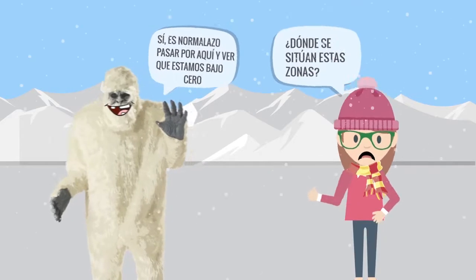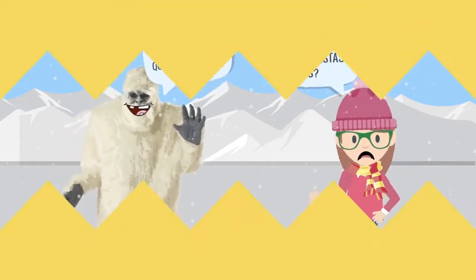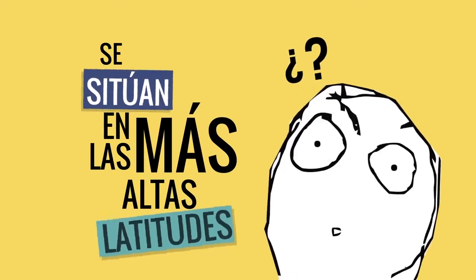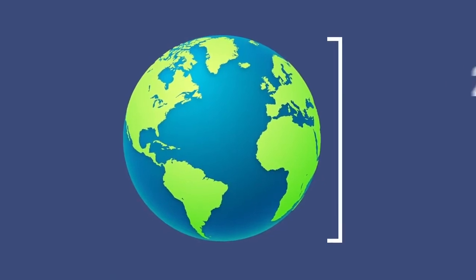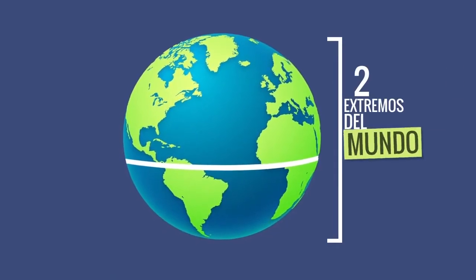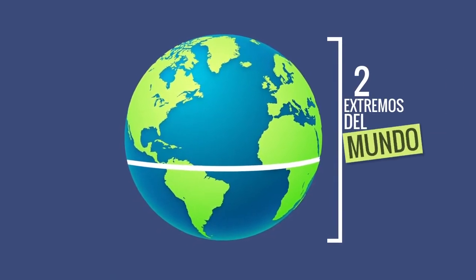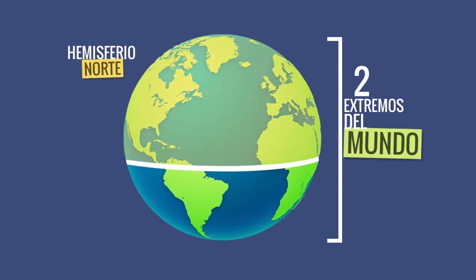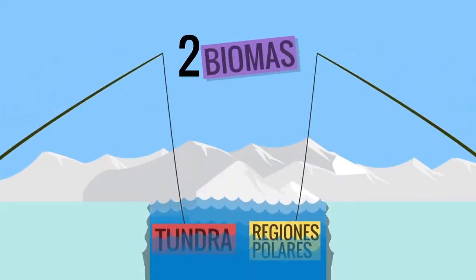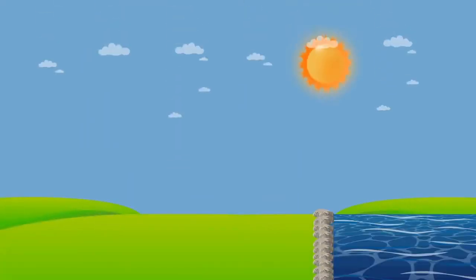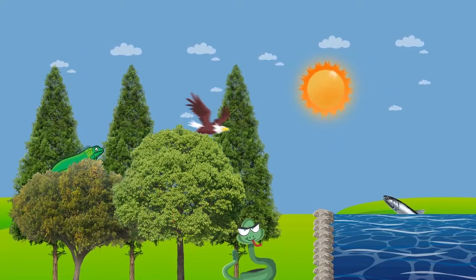¿Dónde se sitúan exactamente estas zonas? Se sitúan en las más altas latitudes. Miremos el mapa del mundo para contestar: en estos dos extremos del mundo se sitúan las zonas frías. Este lado es conocido como hemisferio norte y el hemisferio sur. Además de encontrar dos biomas: la tundra y las regiones polares. No te olvides que un bioma es un área que comparte el clima, la flora y la fauna.